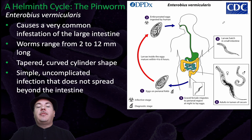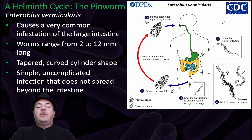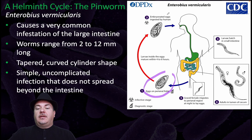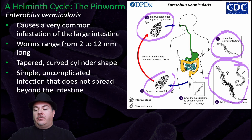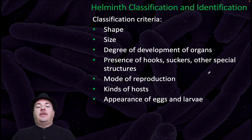The pinworm causes a very common infestation of the large intestine. Worms range from 2 to 12 millimeters long and have a tapered or cylindrical shape. It involves a simple, uncomplicated infection that does not spread past the intestine. Eggs are released through fecal matter, then ingested in the embryonic stage. Larvae hatch in the small intestine, and then adults are found inside the large intestine, where they lay eggs to continue the cycle.